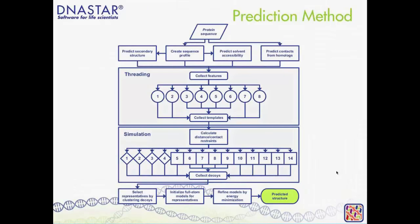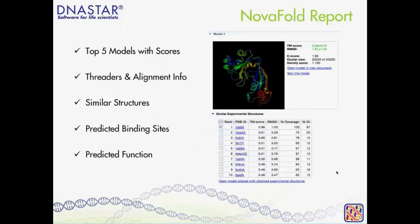The end user simply puts in a linear amino acid sequence, runs through the NovaFold process, and the output is a predicted structure. At the end of a NovaFold prediction, we present as many as five different models for the query protein. These final models are representatives from the clustering process — the top five clusters selected. We present some global quality scores to help quickly assess the quality of the models being presented.